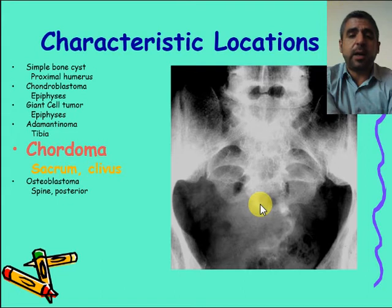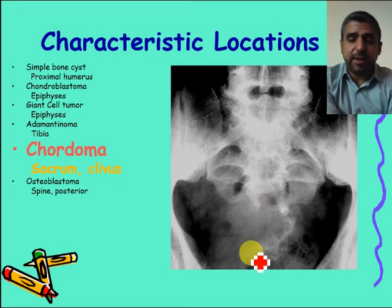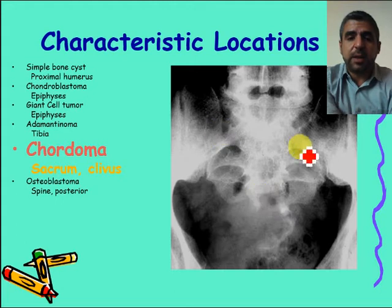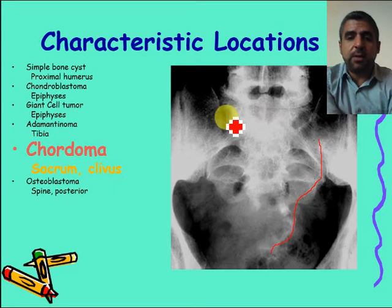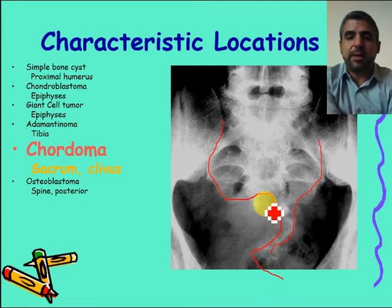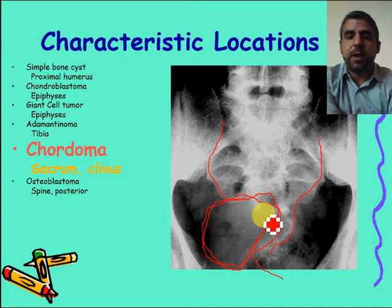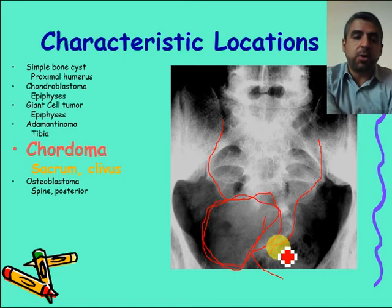Chordoma is a very characteristic lesion occurring almost always in elderly patients. It involves the clivus and the sacrum or sacrococcygeal area. You can see the border of the sacrum on one side, but on the other side it is missing — a lesion is destroying the sacrum. In an elderly patient, this is highly suggestive of a chordoma.